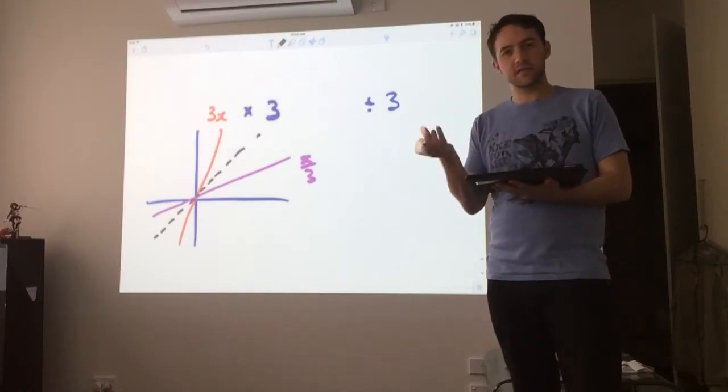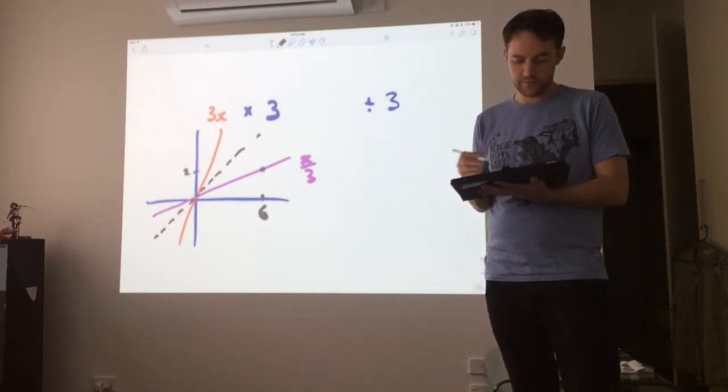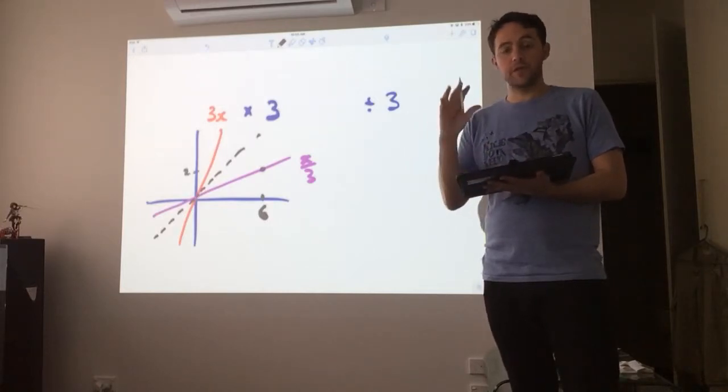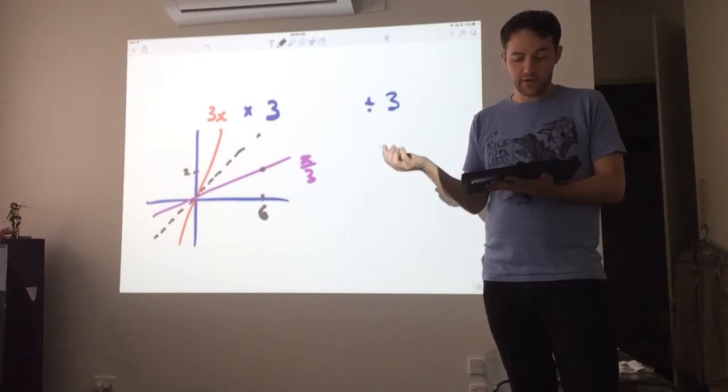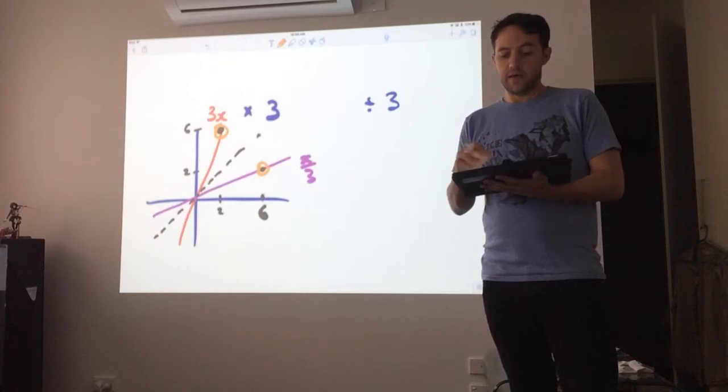but it essentially means that the x and y components are able to swap here. So if we have, for instance, this point here is x equals 6, and obviously 6 divided by 3 equals 2, then it's also going to be true that when x equals 2, y is going to be 6.